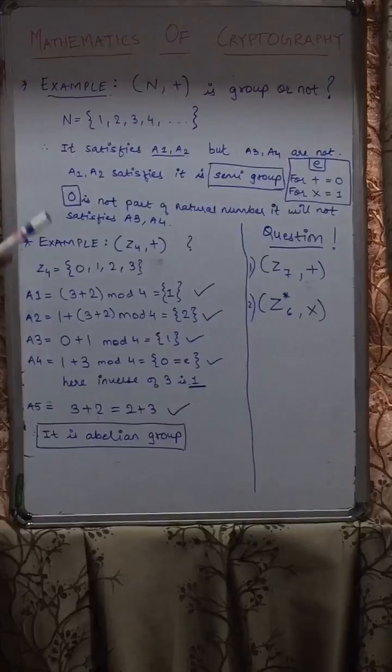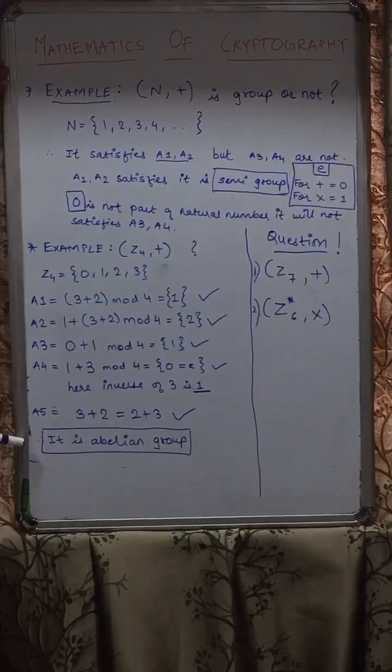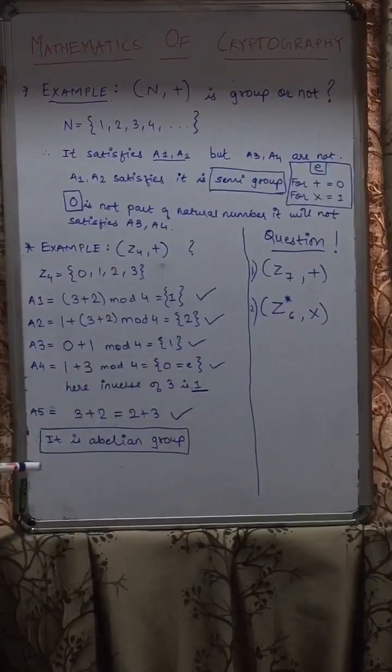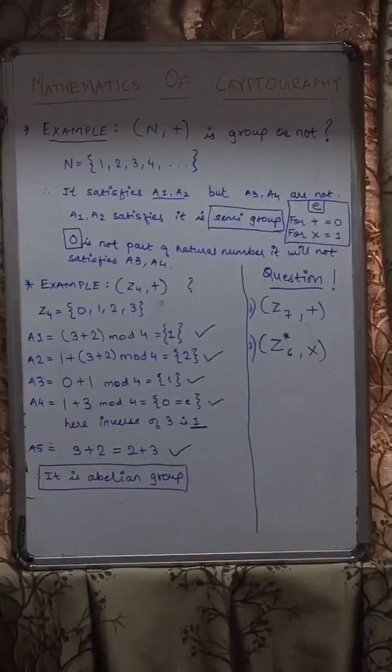So as I taught you earlier, if all the properties A1, A2, A3, A4, and A5 are satisfied, then this particular group is known as an abelian group.